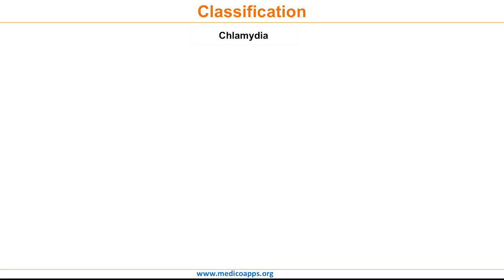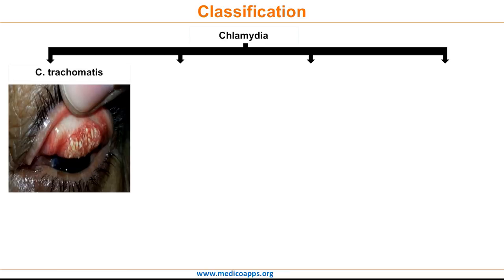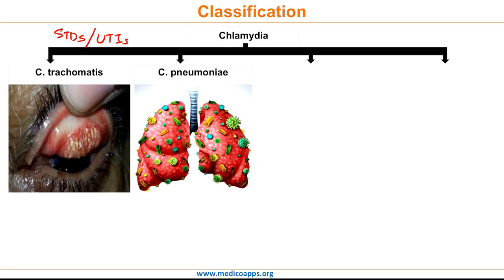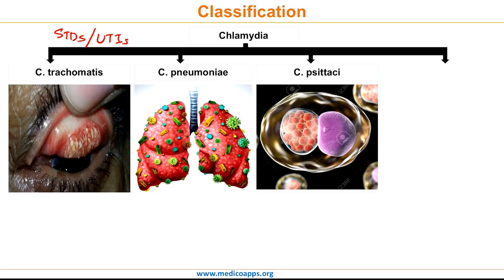Let's now look at the different species of Chlamydia. The clinical manifestation of trachoma is due to Chlamydia trachomatis. Chlamydia trachomatis is also a very important cause of sexually transmitted disease and UTI in sexually active adults. Then we have Chlamydia pneumoniae, which causes atypical pneumonia along with pharyngitis and bronchitis. The next species is Chlamydia psittaci, whose hosts include birds including domesticated poultry, as well as cattle, sheep, pig, and horse. Chlamydia psittaci is transmitted by inhalation, contact, or ingestion among birds and to mammals.